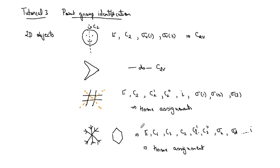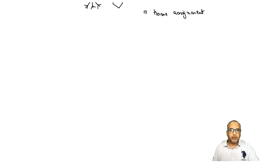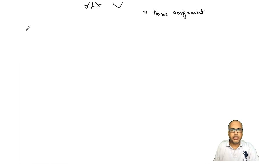Try to look around where you live or study, take different objects, and find out what point group they belong to. That will give you practice in identifying point groups. Once you know how to find the point group of an object, doing it for a molecule will also be easy. Those were 2D objects — let's now look at some 3D objects.